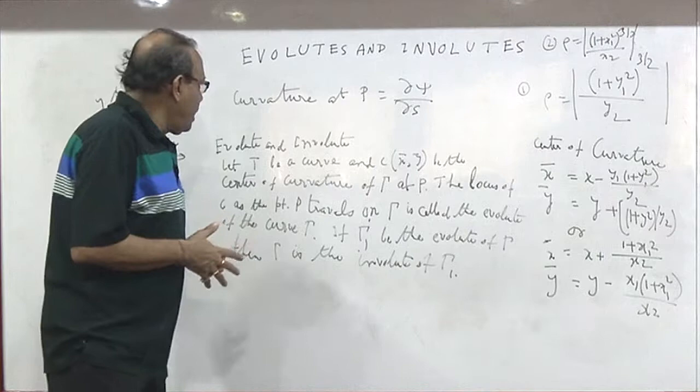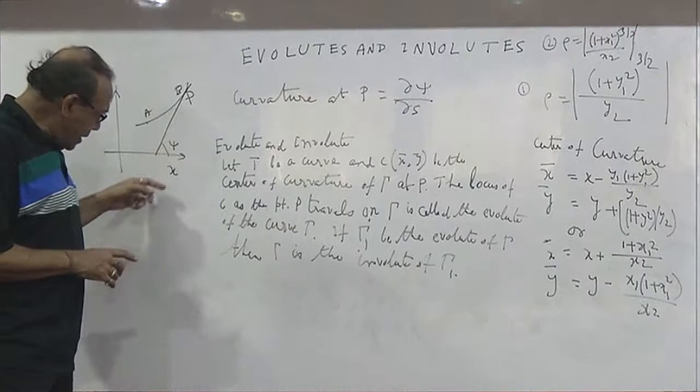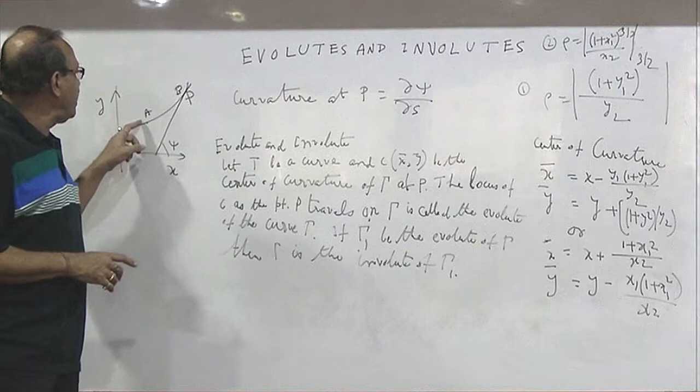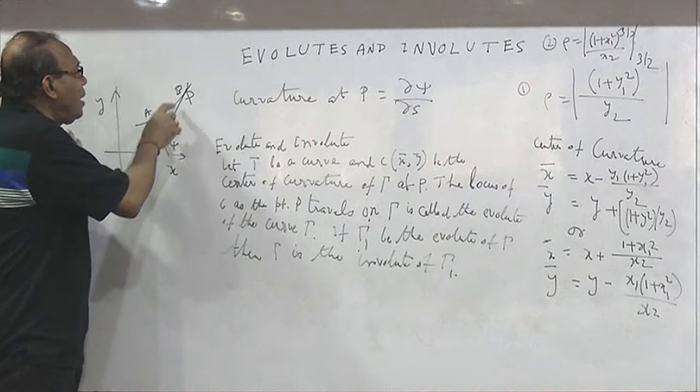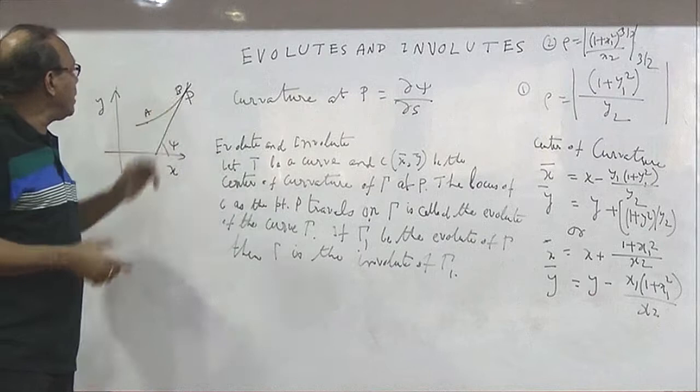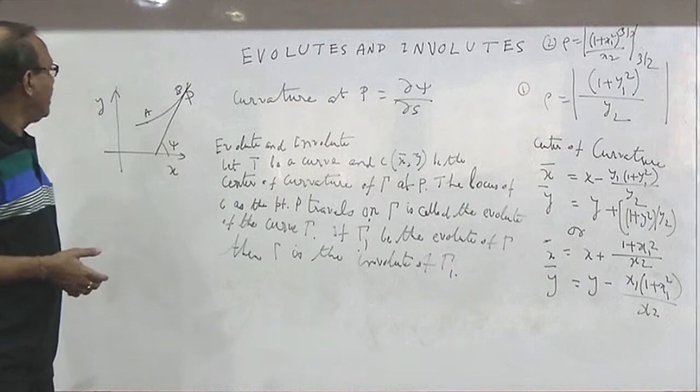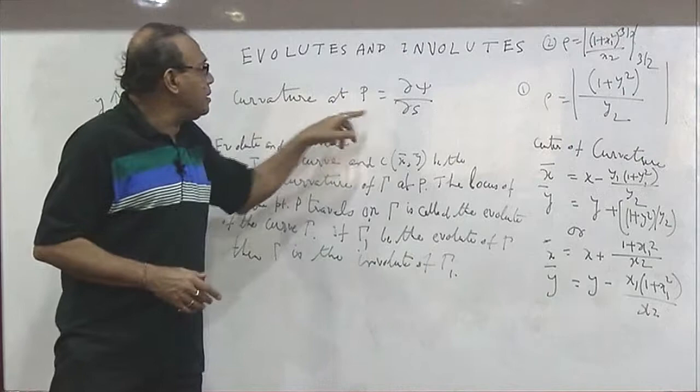The concept is: I have a curve with an independent variable and a dependent variable. A is the starting point and B is where the curve goes on. Let B and P be the same — as point P travels, the coordinate of B equals the coordinate of P. I draw a tangent; the tangent makes an angle ψ with it. Then I define arc length AB equal to S, and curvature at the point is defined as dψ/ds.